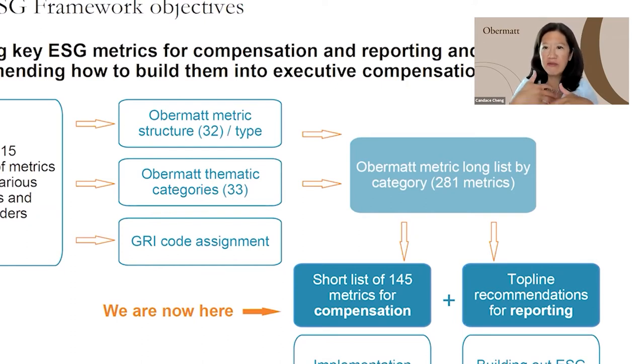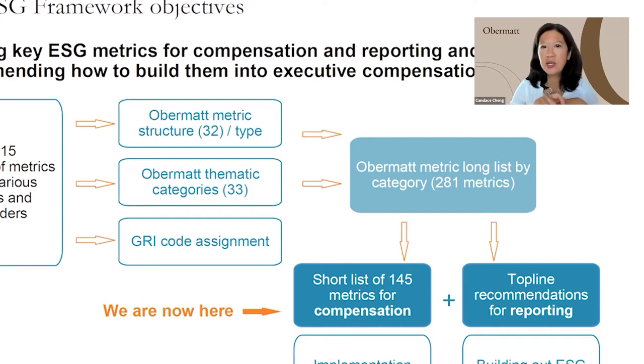In going through these 1,200 metrics, we created a structure that looked at the metrics from a few different perspectives. One of them was really in terms of overall type — what we call our metric structure. Even here there are 32 different types of metrics that we've identified. Originally we looked at whether it's a number, a yes/no question, or a percentage, but in the end we found there are actually 32 different categories that these metrics fall into.